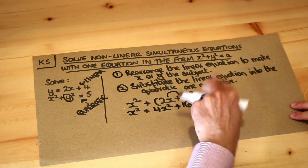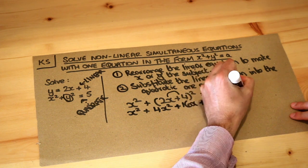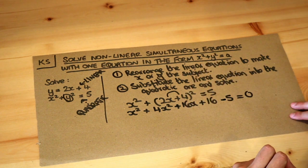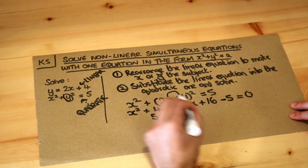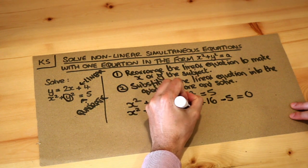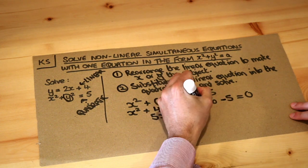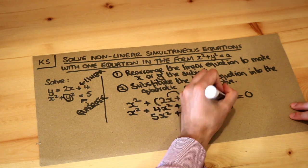That's a nice quick way to expand out something squared if there's two things there. We want to get 0 on one side, so we might as well minus 5 from both sides. Now I just need to tidy this up: x squared plus 4x squared is 5x squared, we've got the plus 16x, and then 16 minus 5 is plus 11 equals 0.